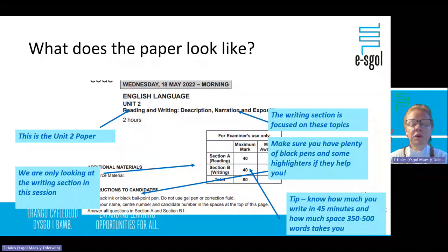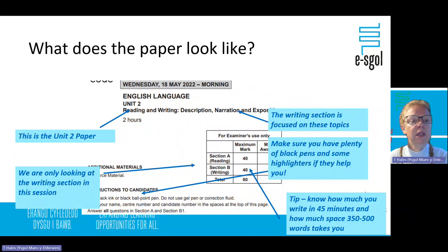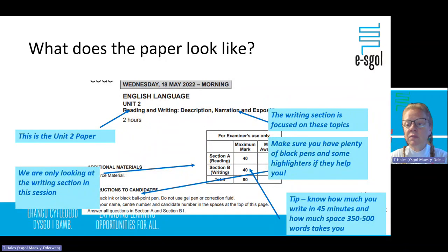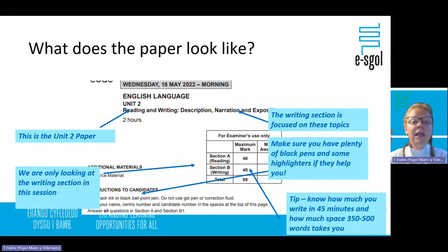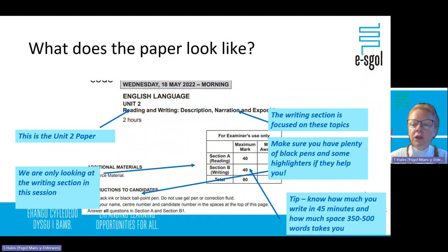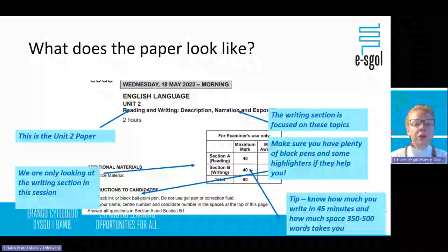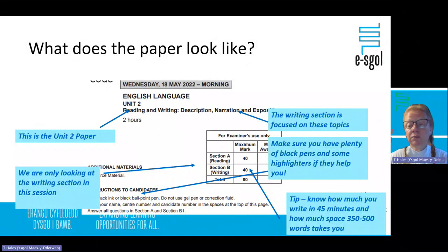This is the front of the paper — the writing section of the Unit 2 paper. Unit 2 covers description, narration, and exposition. When you sit the Unit 2, you're going to have two questions linked to one theme. You have a choice of two and you choose which one you want to do. Description, narration, and exposition are likely to come up, and you choose the one that you want to do.